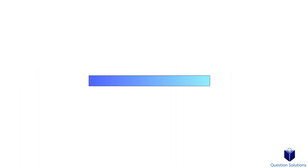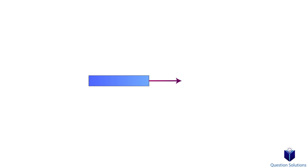To figure out these loadings we can use the method of sections. Imagine we have a beam like this and we want to figure out the internal loadings at point C. To find it, we make a cut through point C. Once we split the member, we would have three loads. The first is the normal force that acts perpendicular to the cross section.